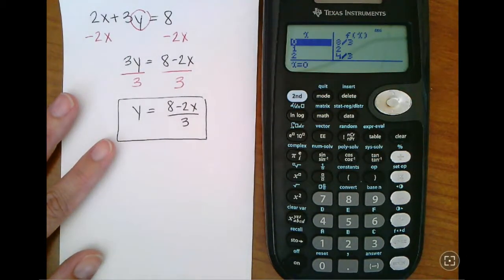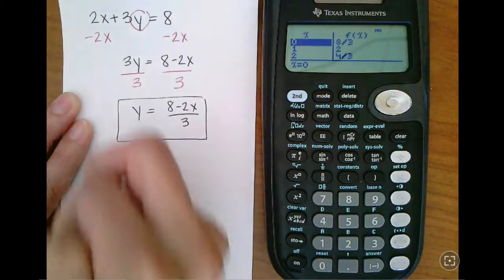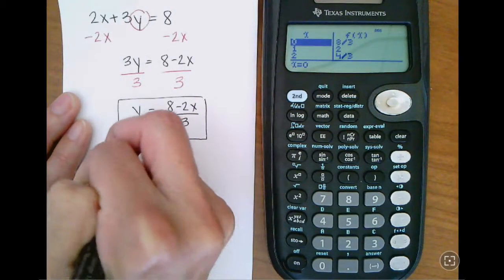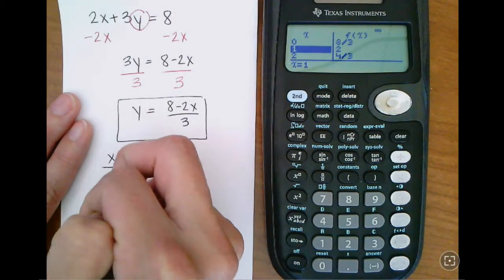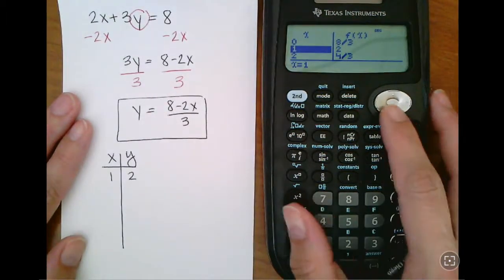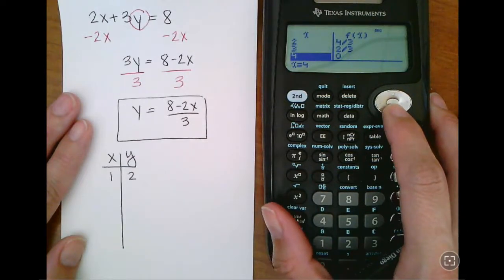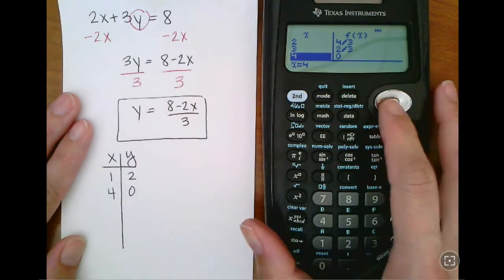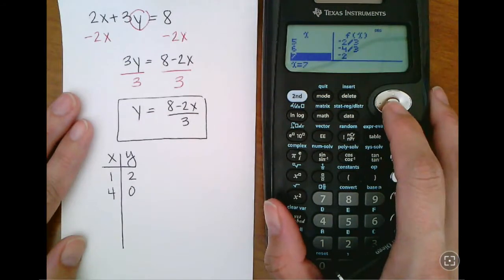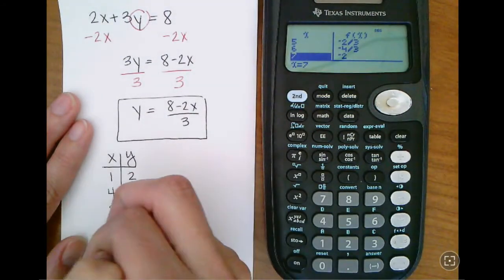And then we can see, set up our table: x, y. Sure enough, we have 1 comma 2, which was the last point I just found when I did this by hand. I can move forward. I've got 4 comma 0 - that was the intercept I found when I was doing it by hand. And then I have 7 comma negative 2.